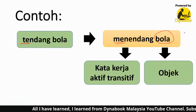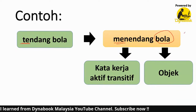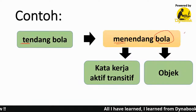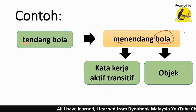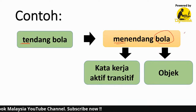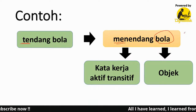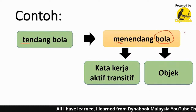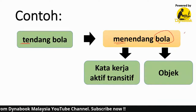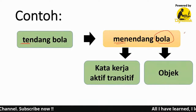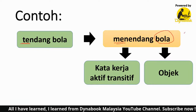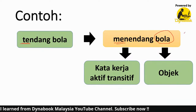Contohnya, saya tanya Ahmad: Ahmad menendang apa? Kita akan tanya dia menendang apa - tin ke, bola ke, biskut ke, bag ke? Bila kita tanya tu, itulah adalah objek. Contoh ayat: Ali menendang bola. Bola adalah objek. Bukan dia tendang punggung orang lain, bukan tendang kaki orang lain. Saya tahu dia tendang bola.